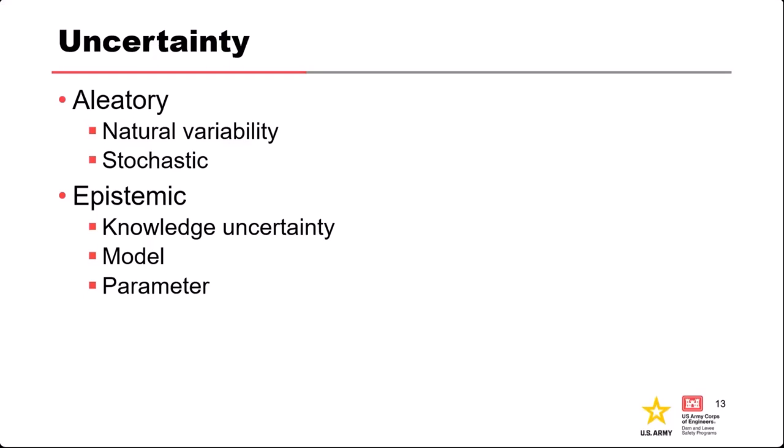The other type is epistemic or knowledge uncertainty, which comes from not having enough data, experience, expertise, or understanding of the physical process we're trying to model. It can come from uncertainty in the data, uncertainty in our model — since all models are just approximations of reality — and uncertainty in the input parameters to our model.